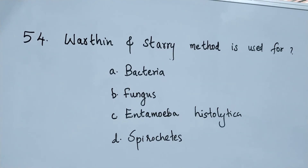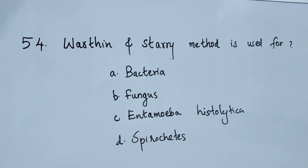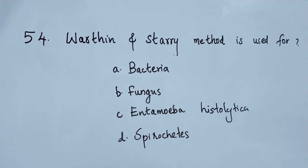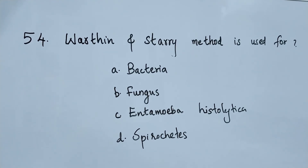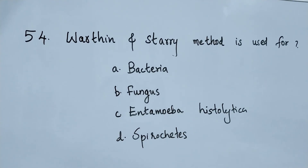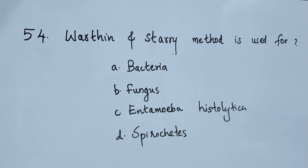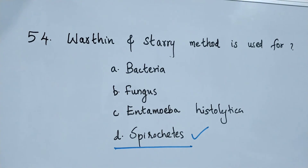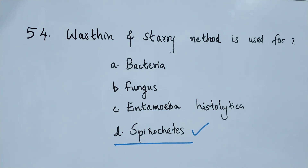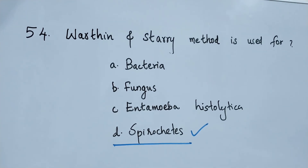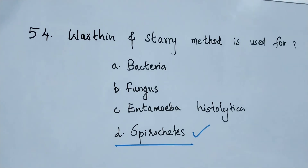Question number 54. Warthin-Starry method is used for: option A bacteria, option B fungus, option C Entamoeba histolytica, option D spirochetes. The right answer is option D. Warthin-Starry method is used for the detection of spirochetes.